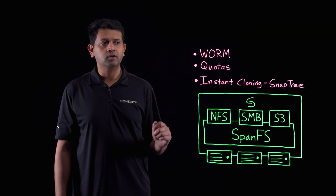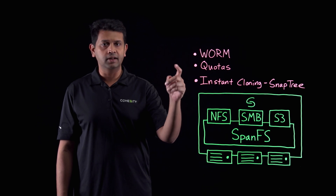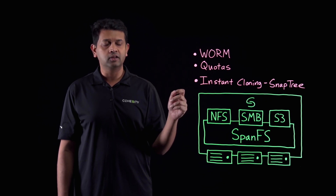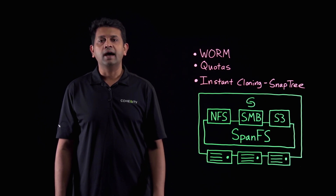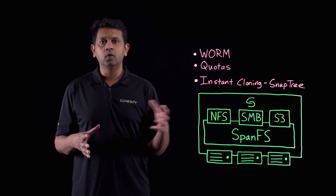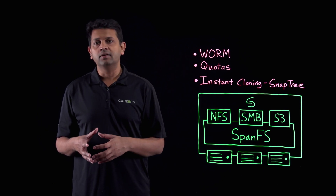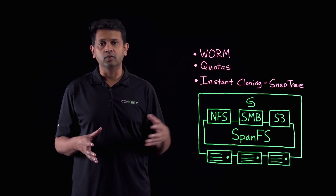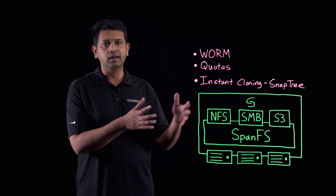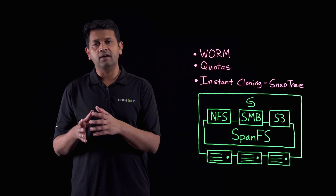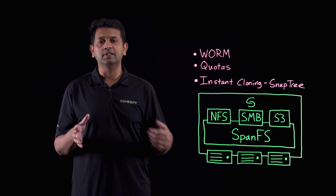Coeicity's file system also provides WORM. It has quotas both at physical and logical level. And it provides instant cloning via SnapTree. SnapTree is a B-plus tree technology, and you can clone any view, file, or directory instantly. You can have an unlimited number of clones — you can take a view, clone it, and clone that again. Even with a large number of clones, you do not have performance degradation.